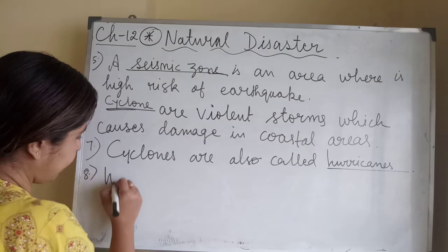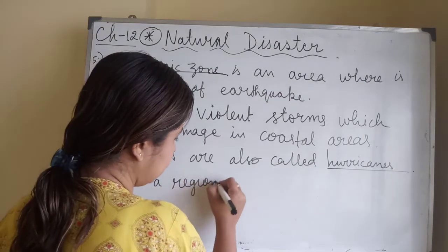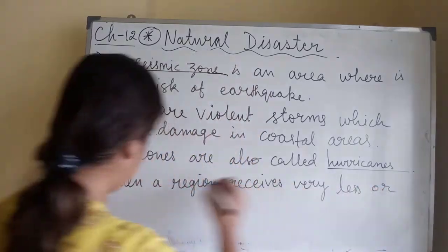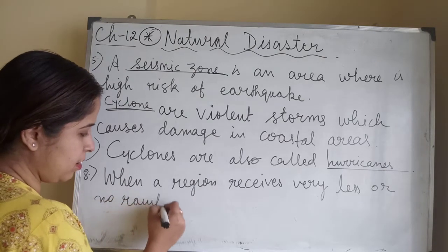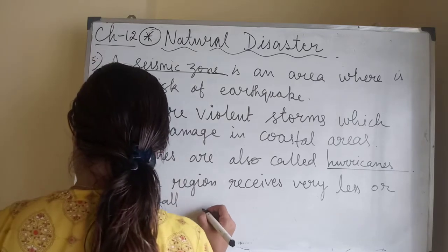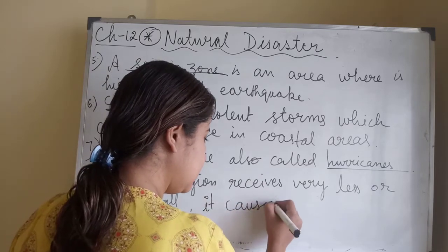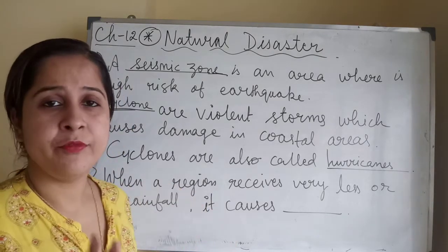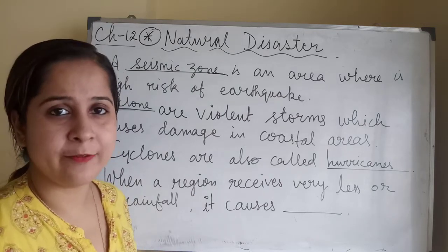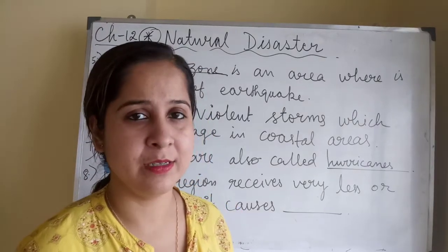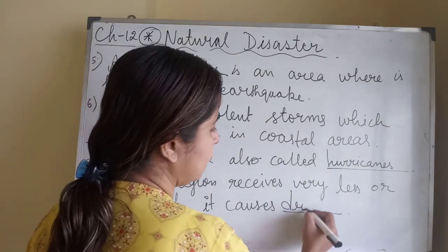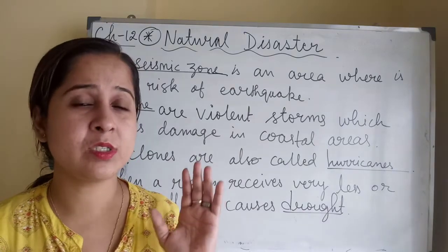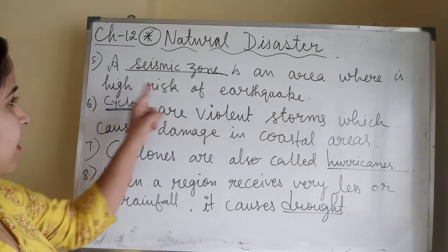When a region receives very less rainfall, or sometimes no rainfall throughout the year, the situation that occurs is called drought — spelled D-R-O-U-G-H-T. Drought is a situation where there is very less or no rainfall. Please write down these fill-in-the-blank answers in your notebook.